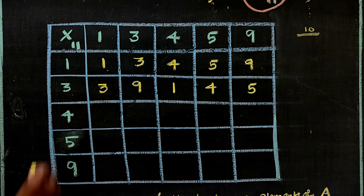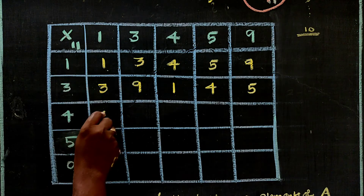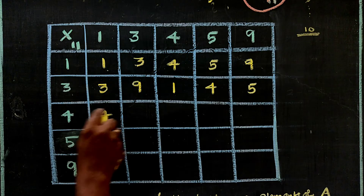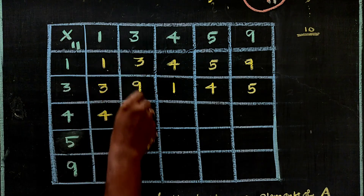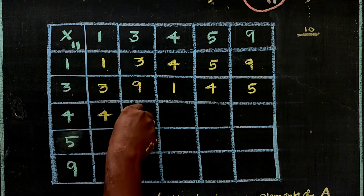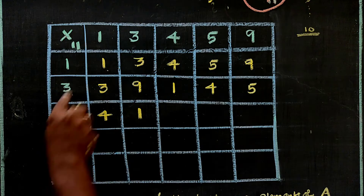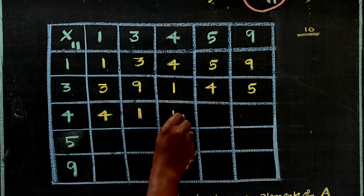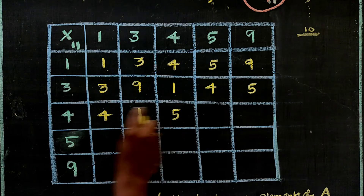Continuing with 4: 4×1=4, 4×3=12, and 12 mod 11 = 1. Then 4×4=16, and 16 mod 11 = 5.